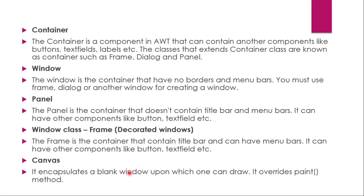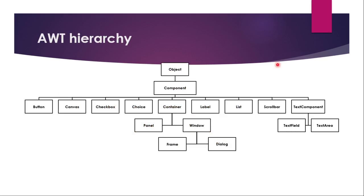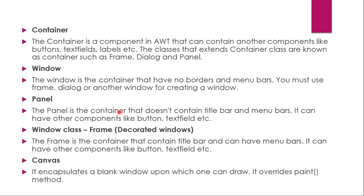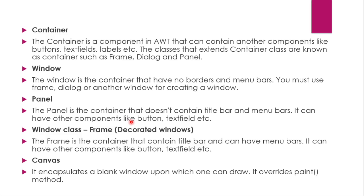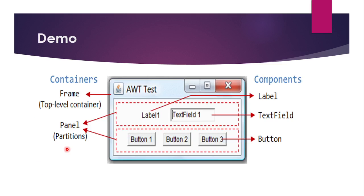A Container is a component that holds other components like buttons and text fields. The Container class is extended further — it has Panel and Window underneath, and under Window you have Frame and Dialog. A Window is a container that has no borders or menu bars, so you must use Frame or Dialog to add those. A Panel does not contain a title bar or menu bar — within a panel you simply place components.